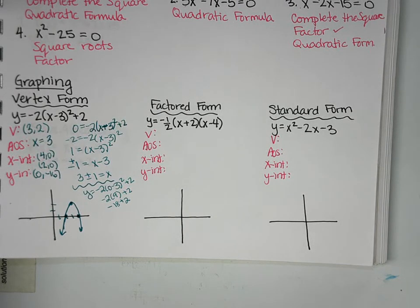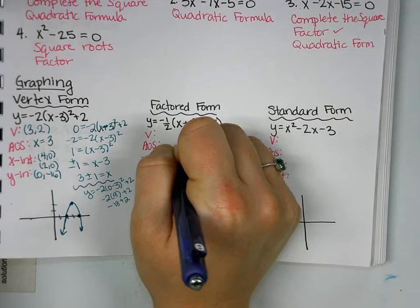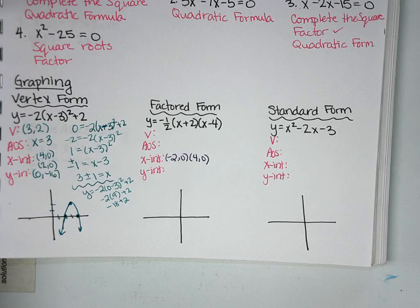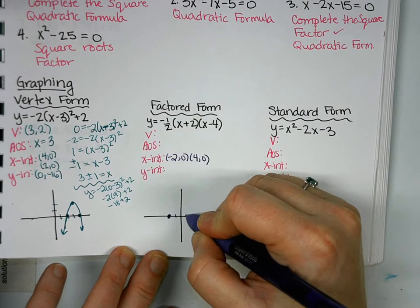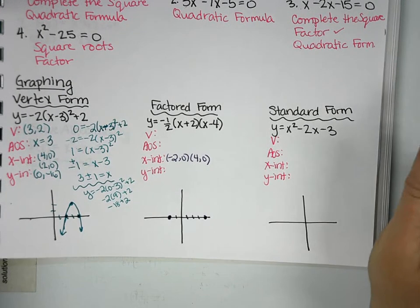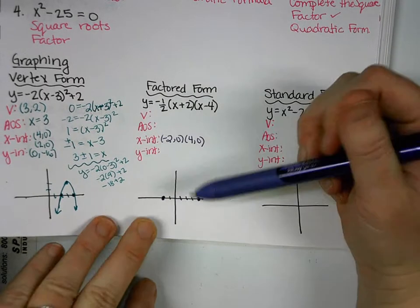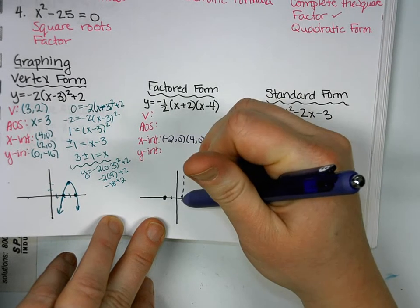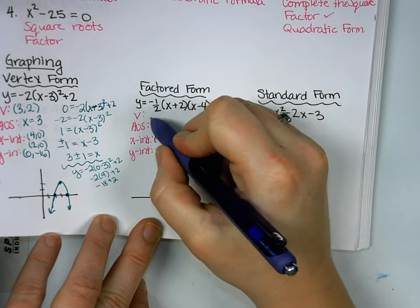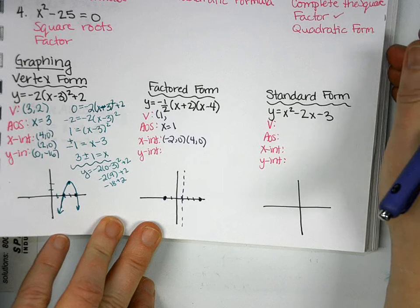Then you're going to have two that are factored form. So what can we easily find in factored form? The x-intercepts. So that's where we're going to start. So if we look at our problem here, what are the x-intercepts? Negative 2, 0 and positive 4, 0. So if we go and sketch and plot those, so negative 2 and 4. What did we find after the intercepts? The axis of symmetry. So to find that, we found the middle. So our middle is 1. So our vertex is 1 comma something. How do we find that something that goes with our vertex?